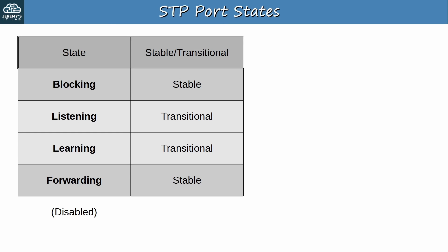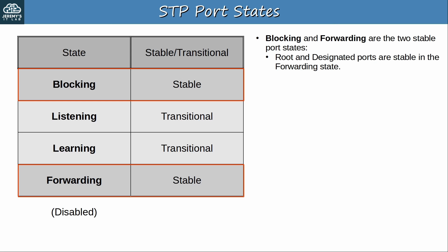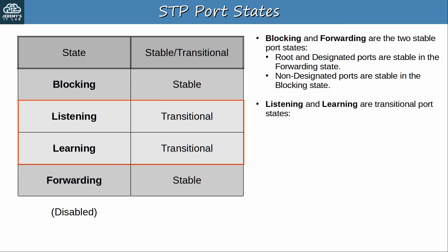Here's an overview of the STP states. Blocking and forwarding are the two stable port states. So after the network has converged and is stable, all ports should either be in the STP blocking or forwarding state. Root and designated ports are stable in the forwarding state, and non-designated ports are stable in the blocking state. The listening and learning states are transitional. In a stable, converged network, no ports should be in these states. Root and designated ports will move through the listening and learning states in that order before finally moving to the forwarding state.